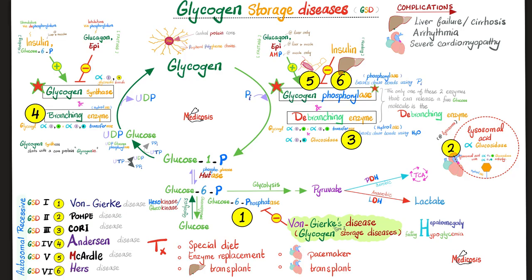Von Goerke's disease is missing glucose-6-phosphatase — type 1. Type 2 is Pompey's disease: the problem is in the heart's lysosomal acid alpha-glucosidase, also called alpha-1,4-glucosidase or de-branching enzyme. Type 3, Corey, has a problem in the de-branching enzyme. Type 4, Anderson, has a problem in the branching enzyme — glucose-1-phosphate gets trapped, liver cells die, and the patient can develop cirrhosis. McArdle disease is a problem in muscle glycogen phosphorylase. Type 6, Ur's disease, has the same glycogen phosphorylase defect but in the liver, giving hepatomegaly and fasting hypoglycemia.